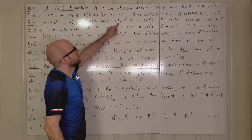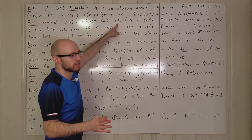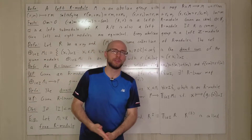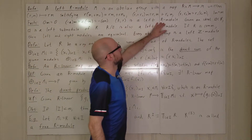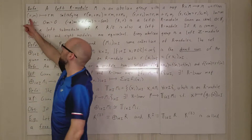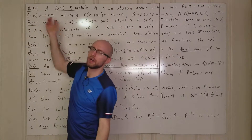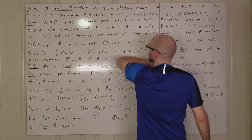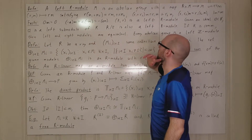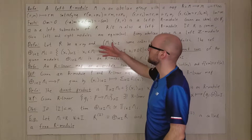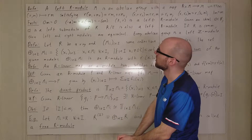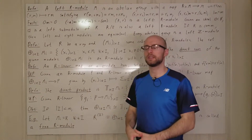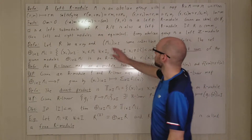If you think of R with respect to its addition, rings are always an abelian group by definition, so R itself is a left R-module. The multiplication for this module is just the multiplication in the ring. Furthermore, if you have an ideal in R, then this ideal is a left submodule of R — it's a subset of R that is a module in and of itself.